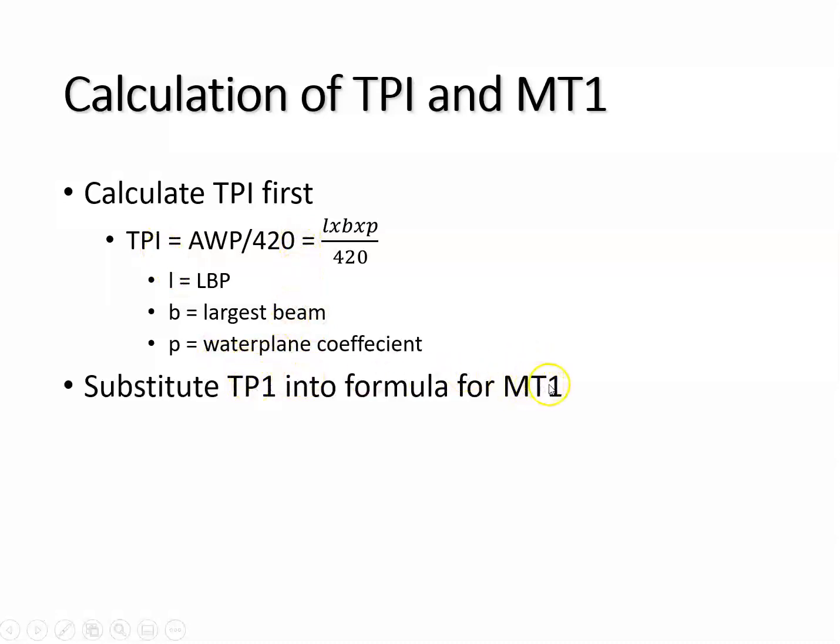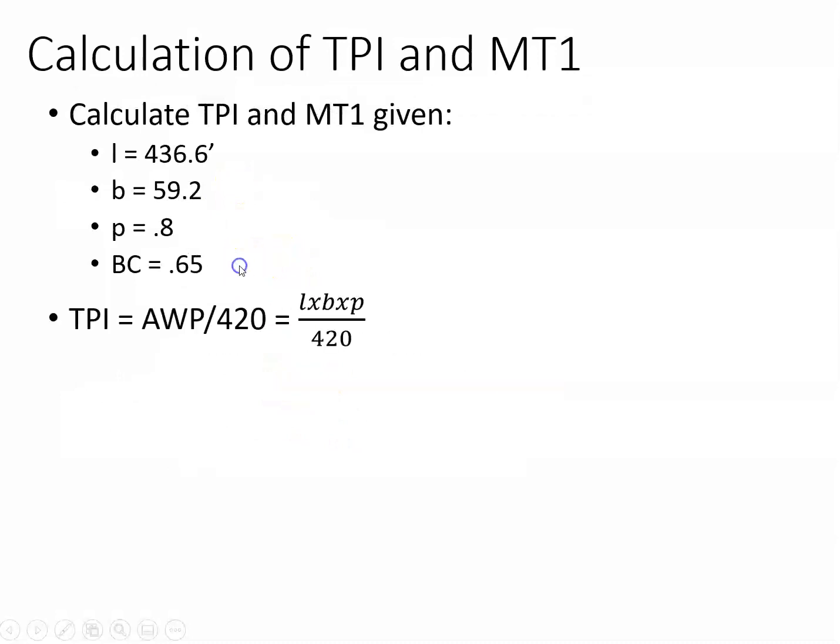Now we're going to calculate moment to trim one inch. The moment to trim an inch formula, TPI is one of the terms. So you have to calculate TPI before you can calculate moment to trim an inch. Here's the formula for that. Moment to trim an inch is a constant associated with the block coefficient. There's this constant that's going to be associated with that. I'm going to show you where you can look that up. And then that's going to be multiplied by TPI squared. This is why you have to calculate TPI first. And divide it by B.